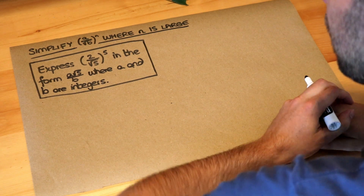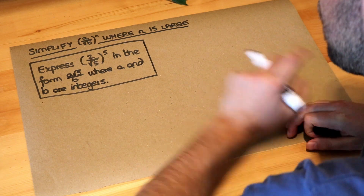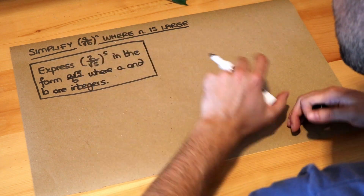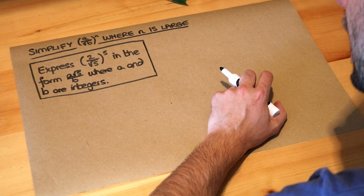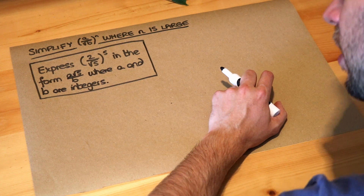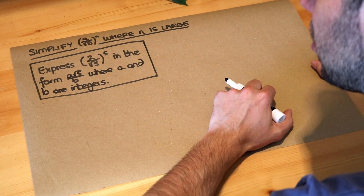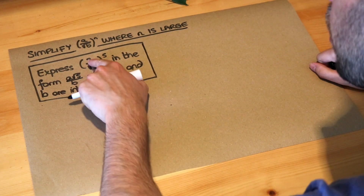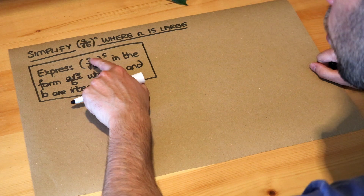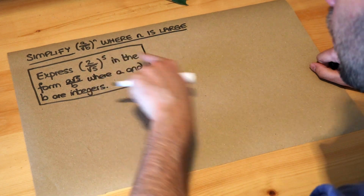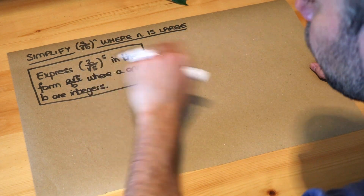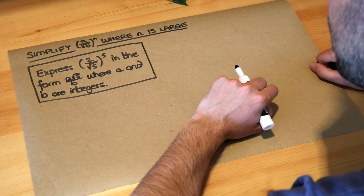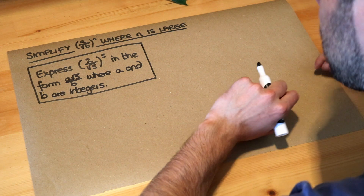Hello and welcome to this Dr Frost video on simplifying a over root b to the power of n where n is large. We want to express 2 over root 5, all to the power of 5, in the form a root 5 over b, where a and b are integers.